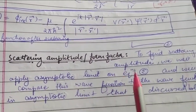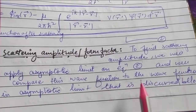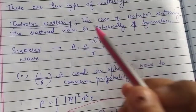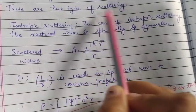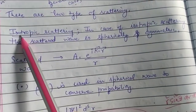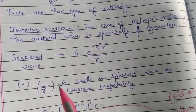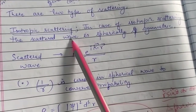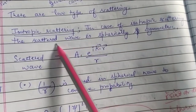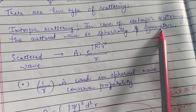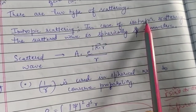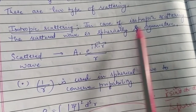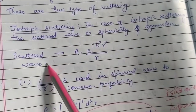There are basically two types of scattering: isotropic scattering and anisotropic scattering. In the case of isotropic scattering, the scattered wave is spherically symmetric.